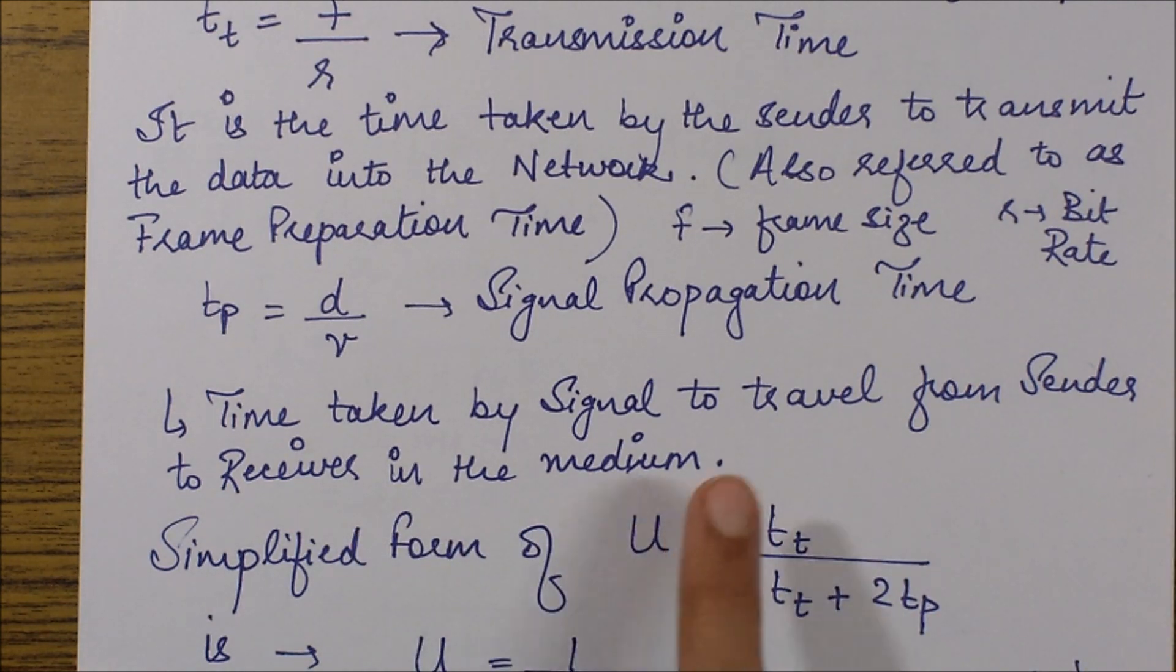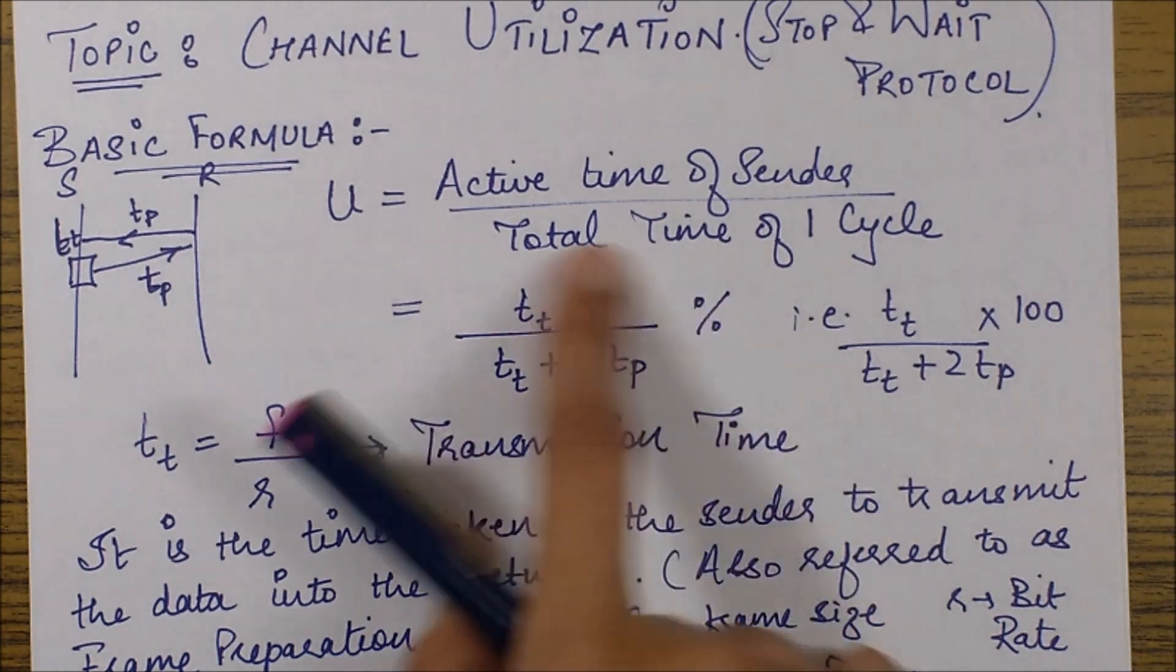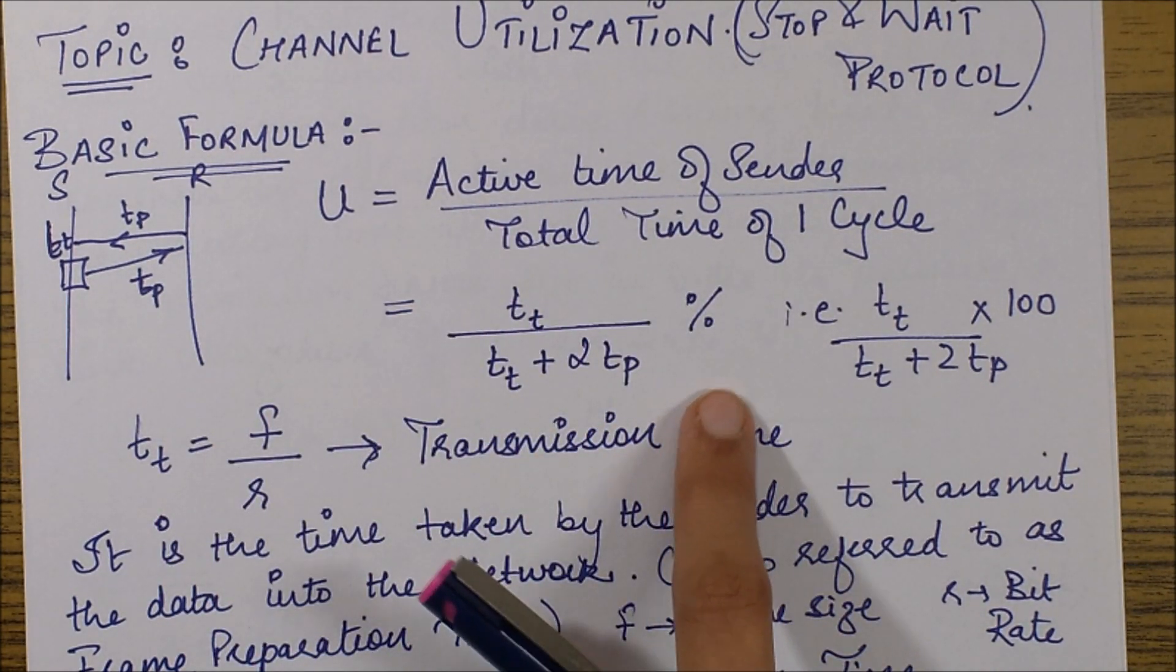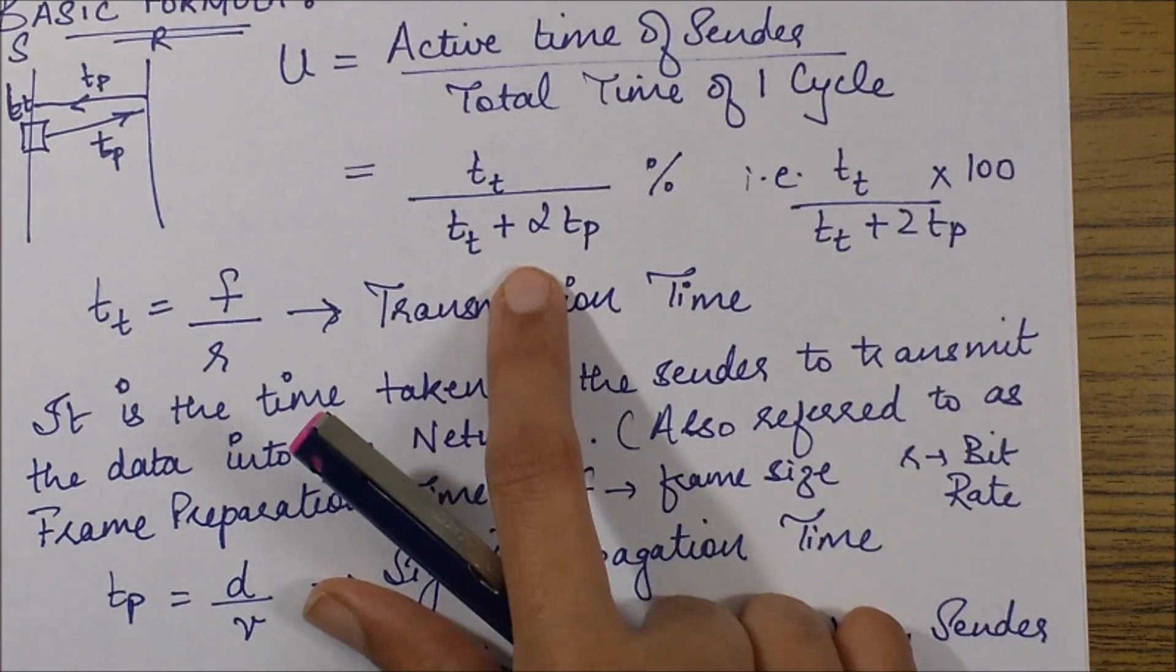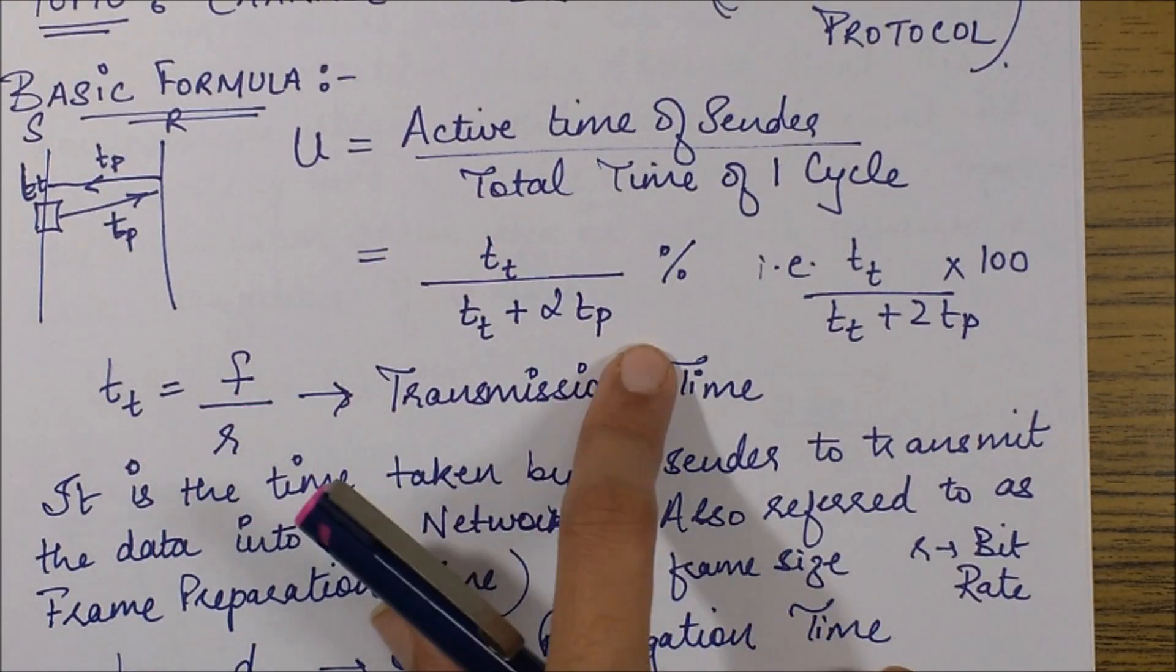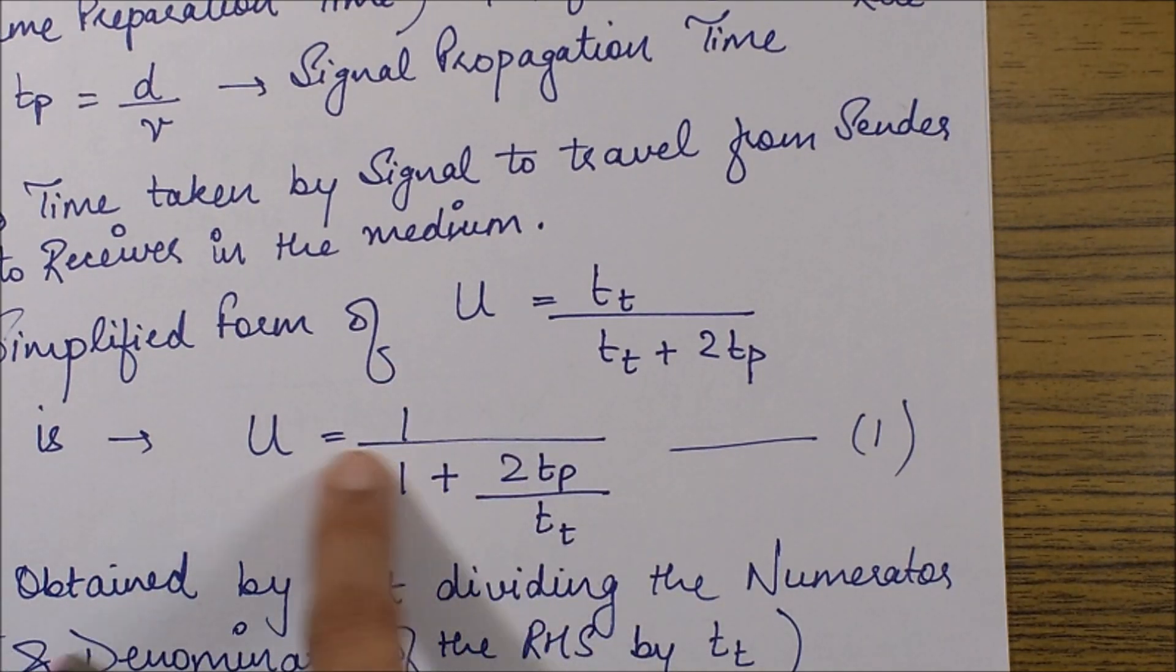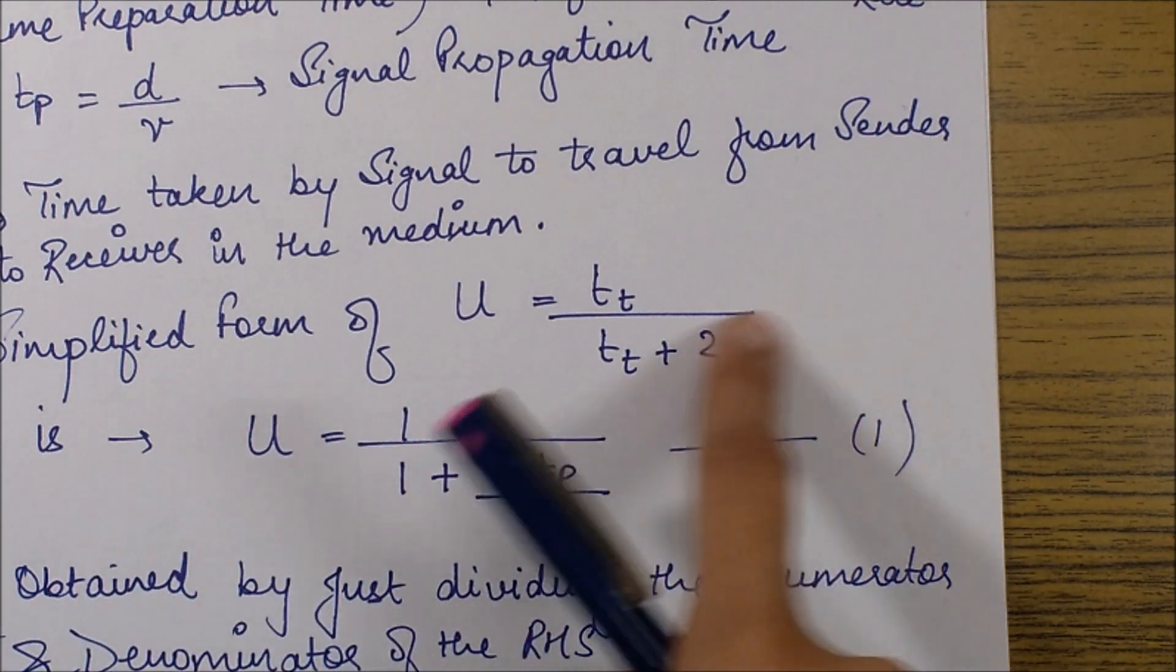We also have a simpler form of this formula which is always used for our numericals. We divide the numerator and denominator by tp, so we get 1 upon 1 plus 2tp upon tt.